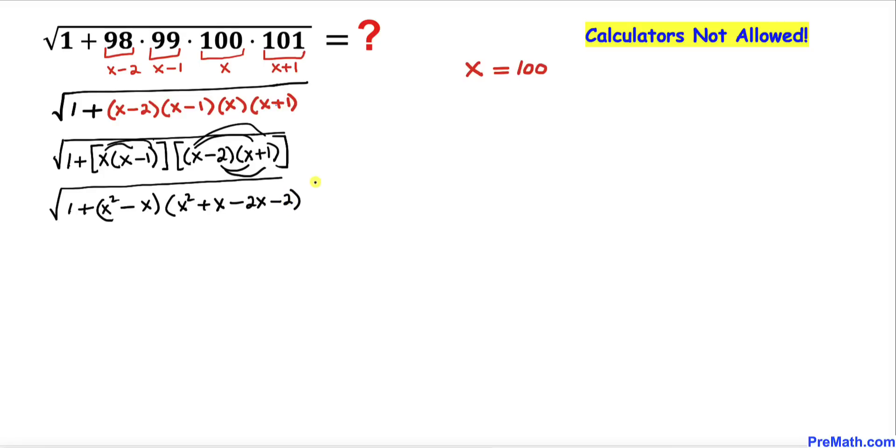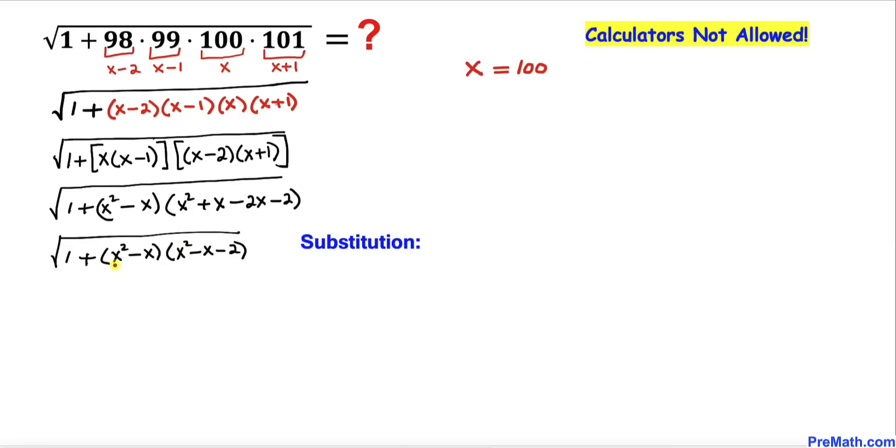Now in this next step, x minus 2x simplified turns out to be negative 1x. Now let's focus on this part: x squared minus x and x squared minus x. Let me go ahead and call this u. So let me make a substitution: let u equal x squared minus x.